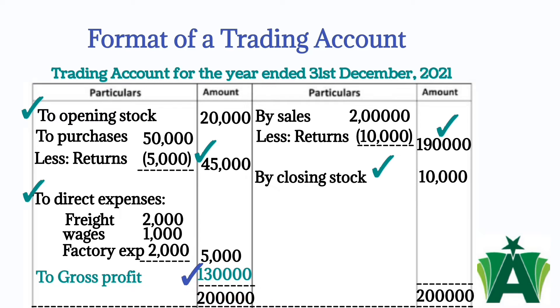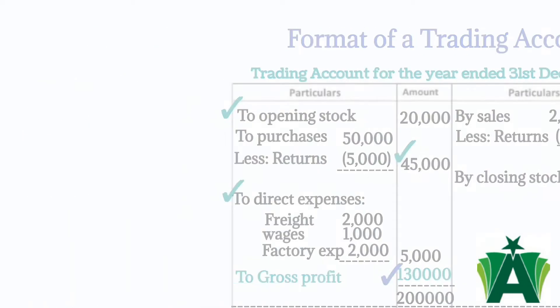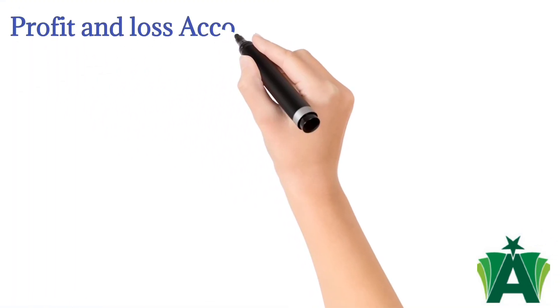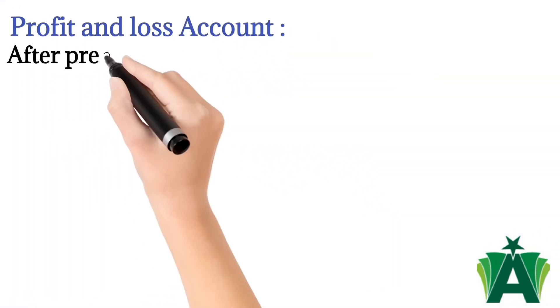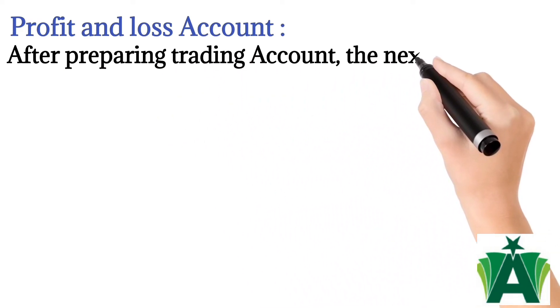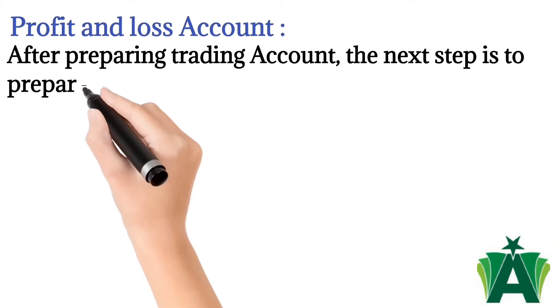If the credit side of the trading account is greater than the debit side, this balance is called gross profit. If the debit side is greater than the credit side, this is called gross loss.